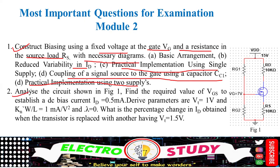Another question is also from MOSFET. There is a diagram given; kindly go through it carefully and note the parameters. The parameters ID is already provided — in milliamperes, but it is better to convert into amps. Then VT is one volt, and lambda is zero. You are asked to calculate the percentage change in ID, i.e., delta ID.